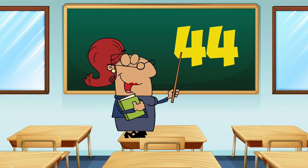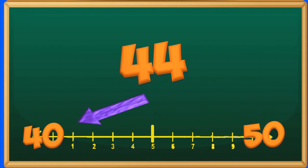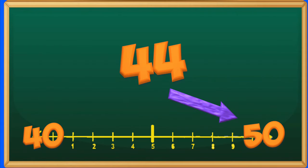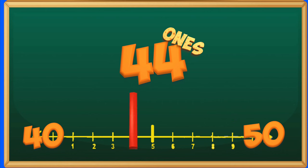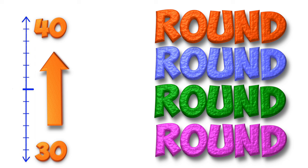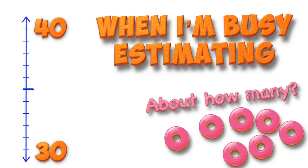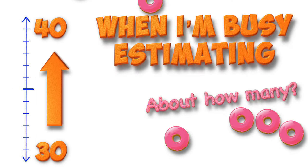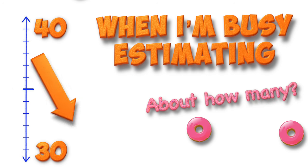My teacher said to round the number 44 — round it to the nearest ten. Does it round to 40 or up to 50? I'll show you what I did right then. I looked at the ones place, it's four or less. That's less than halfway, nobody has to guess. The tens stay the same, it's what I have to say — 44 rounds to 40 each and every day. Round, round, round and round. I'm rounding up or rounding down. When I'm busy estimating, I'm rounding up or rounding down.